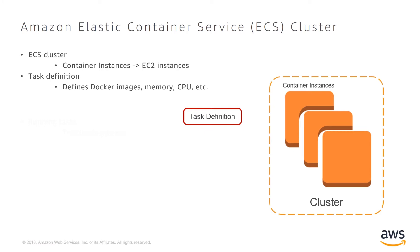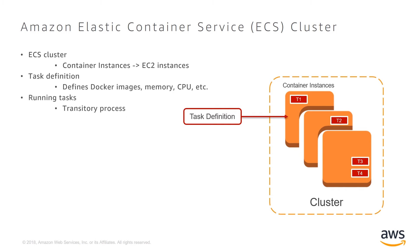Next, we have task definitions, which tell ECS how to run our container. This is where we declare how much memory and CPU for the containers. You can also set an IAM role to give your container AWS credentials to access AWS services. Then you can run tasks for your task definition. Running a task on a cluster is for a transitory process — that means when the process declared in the Docker build file exits, the task running the container will terminate.